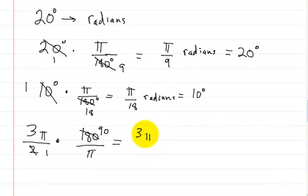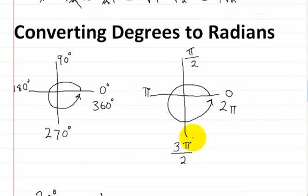This is going to be 3 pi times 90 all over pi. Now these two pis cancel out and you're just left with 3 times 90, which is equal to 270 degrees. That makes sense because that's what we had right here.